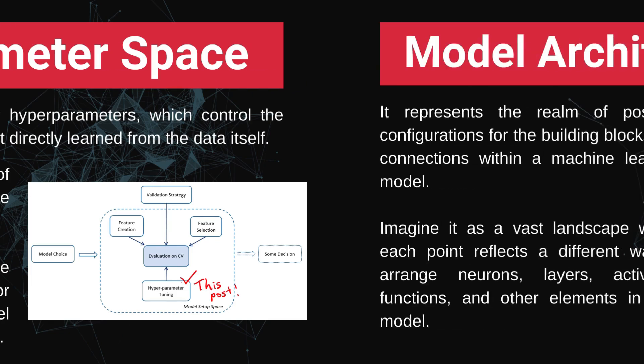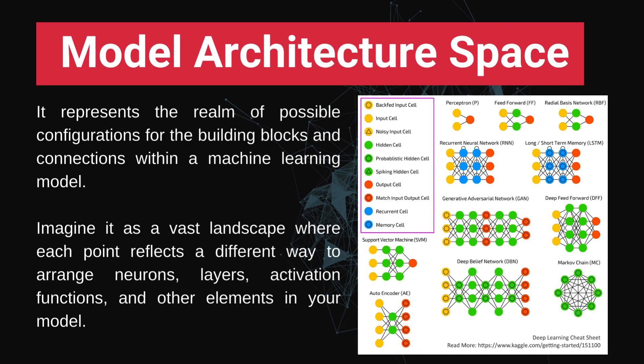The next technique is model architecture space. This optimization technique is completely aligned with deep learning, because in deep learning you can structure your neural network architecture. Whether you use a more complex or simpler architecture is based on your problem. You need to think about what activation functions and what kind of neural network you can use to solve that problem.